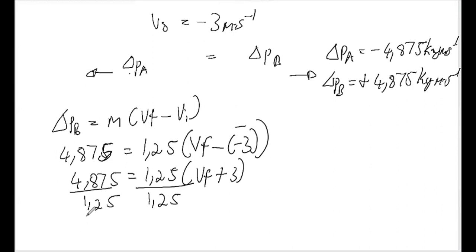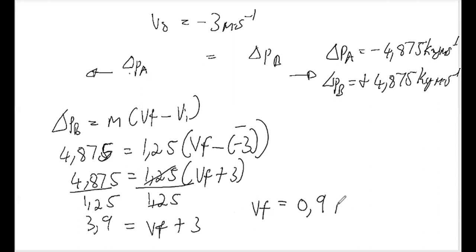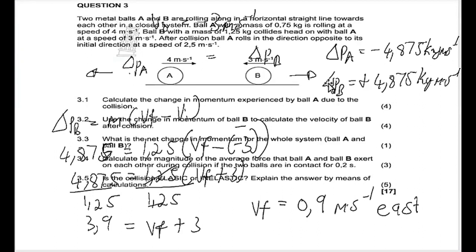Dividing gives us 3.9 equals vf plus 3. Transposing the 3: vf equals 3.9 minus 3, which is 0.9 meters per second. Since it's positive, ball B is moving in the eastern direction. This makes sense because after ball B collides with ball A, it rebounds back to the east.